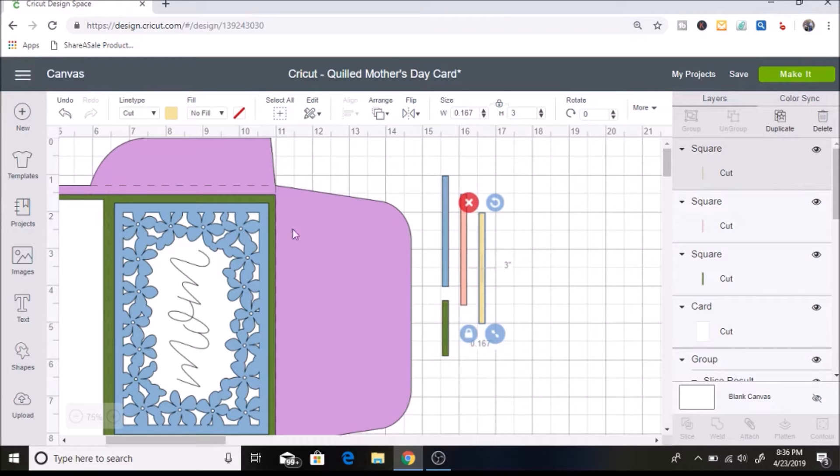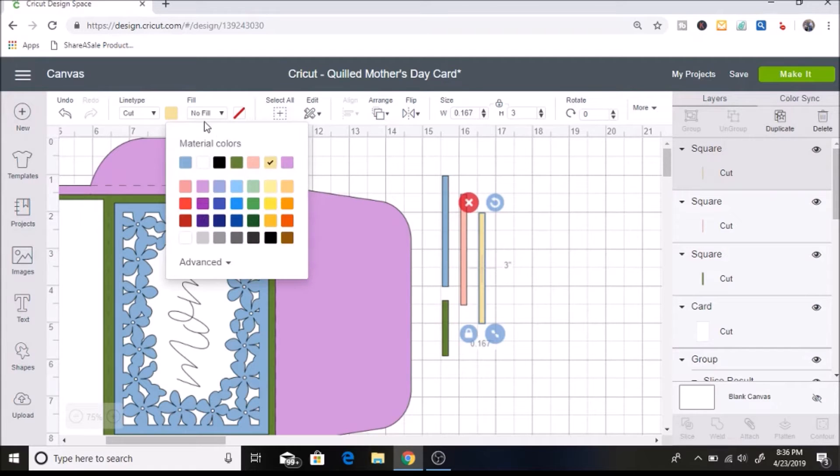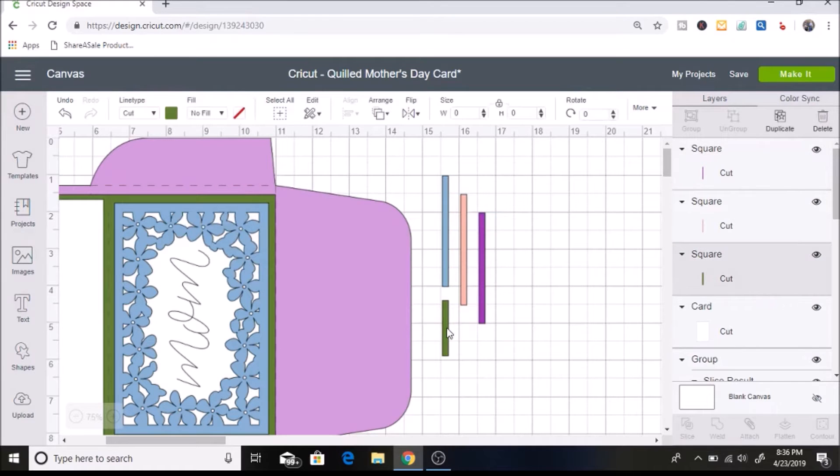And then I'll keep this one pink and then this one is going to be purple. And I'm going to change this one to a different purple from this one because it's going to be cutting on two different pieces of material and I don't want it to cut out on the same mat. So I hope that makes sense. Basically with the mats it separates it by colors. So I'm going to have this be purple but it's going to be a different material so I'm going to change it to a different color purple.